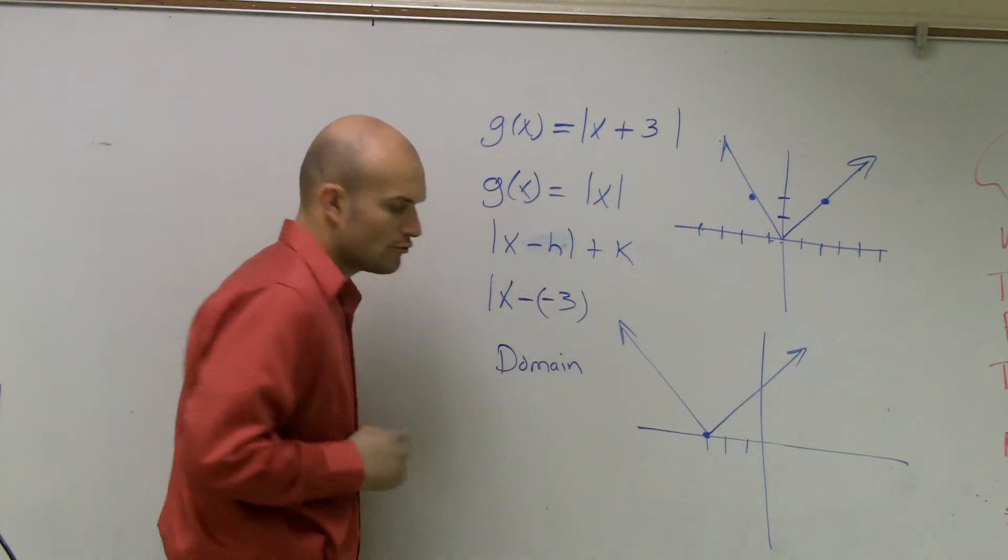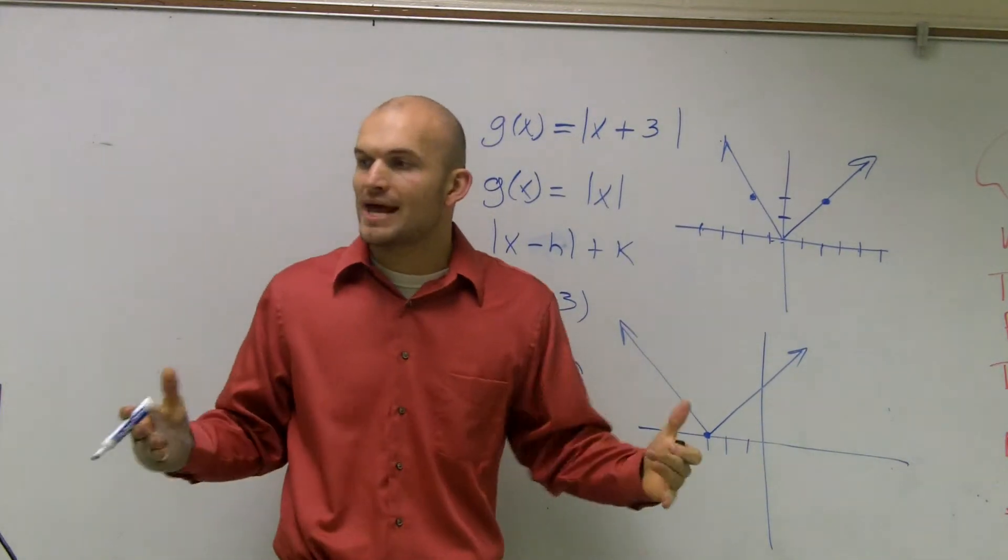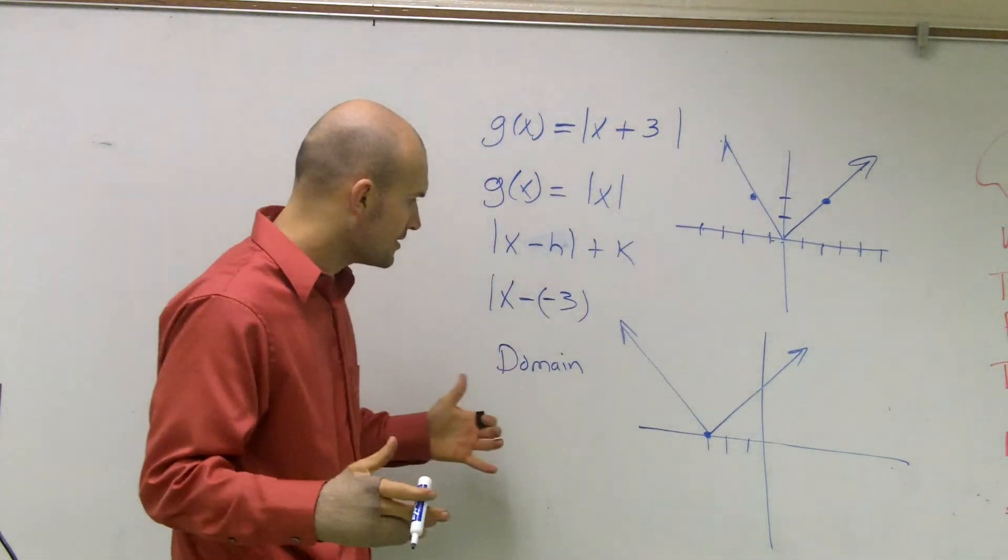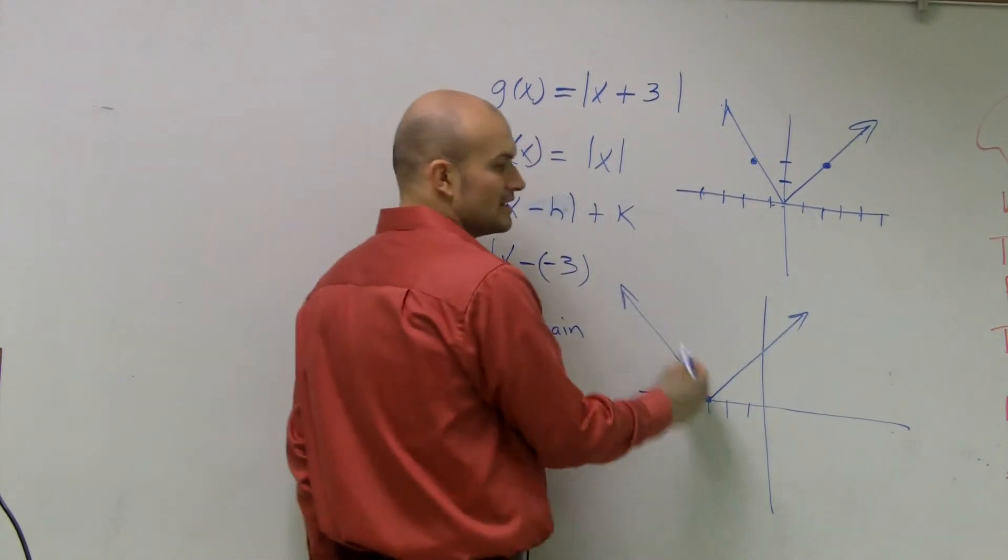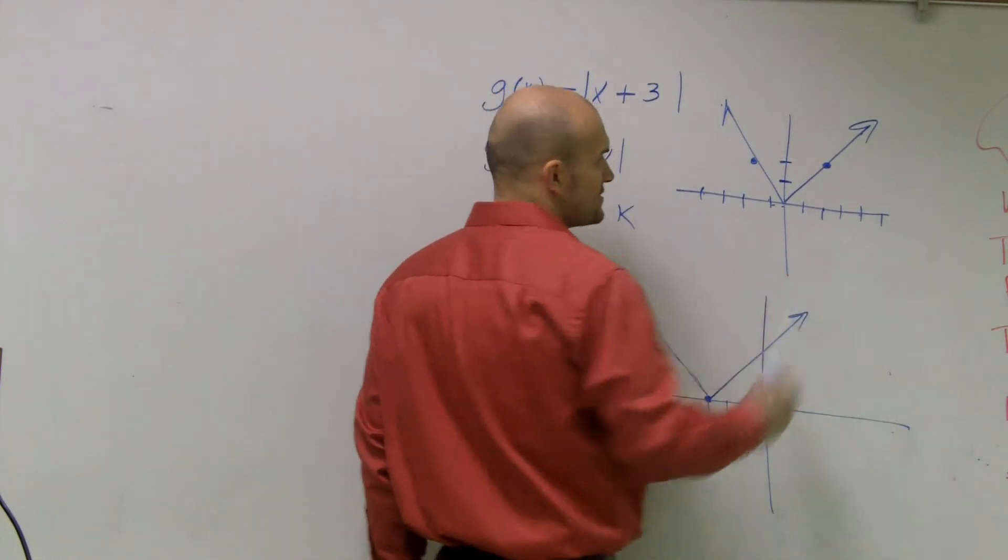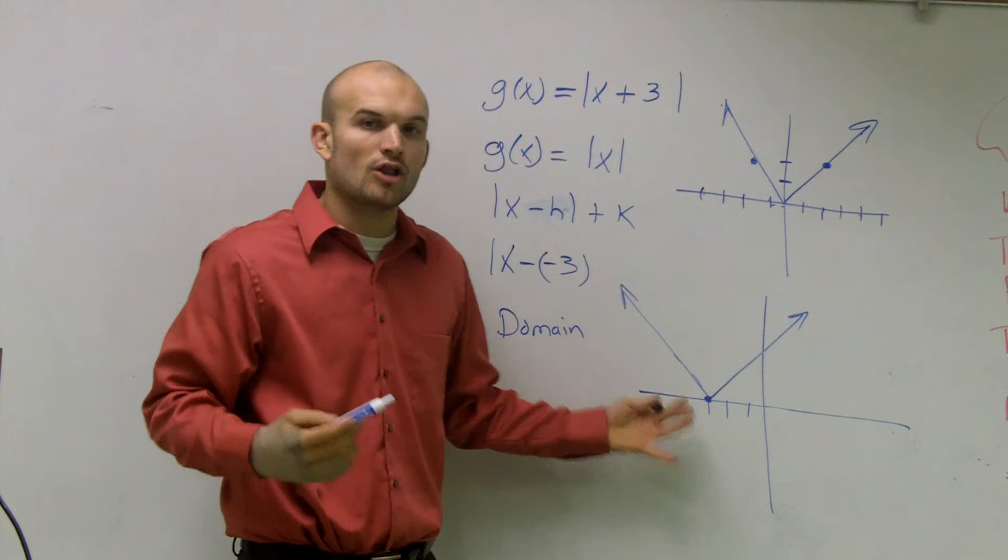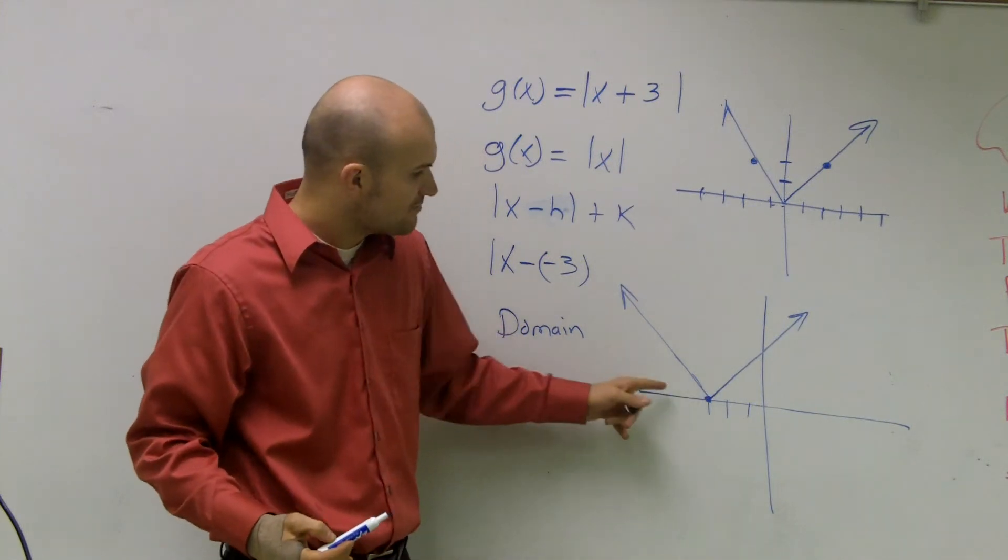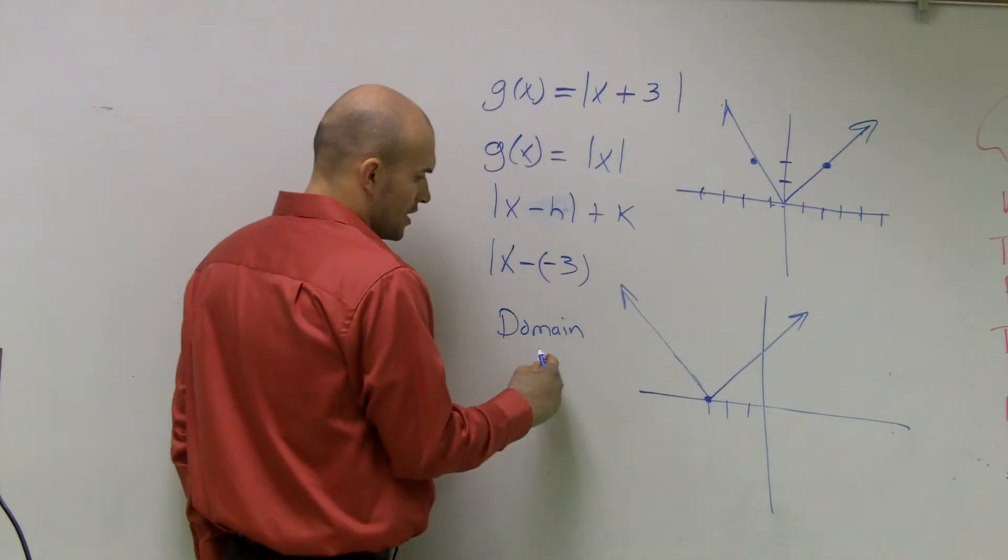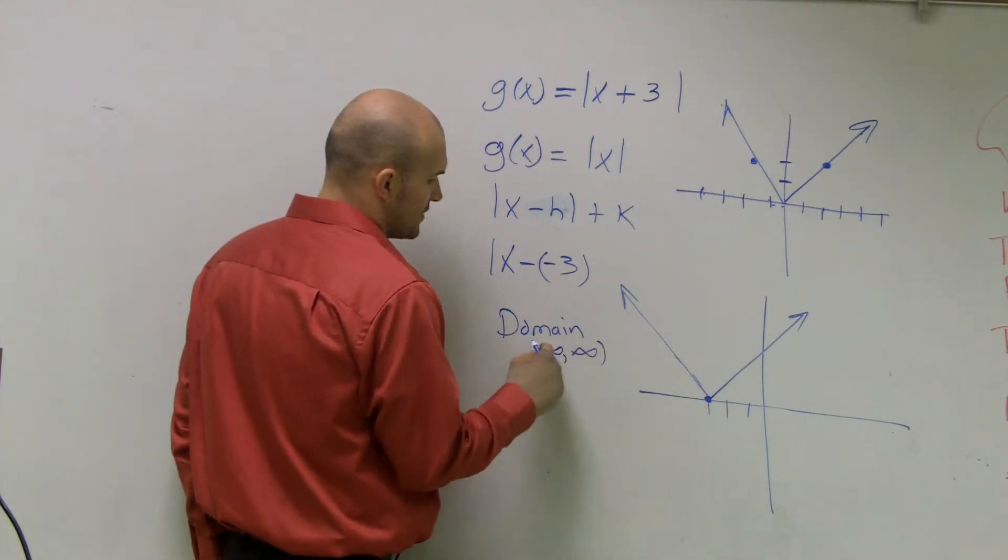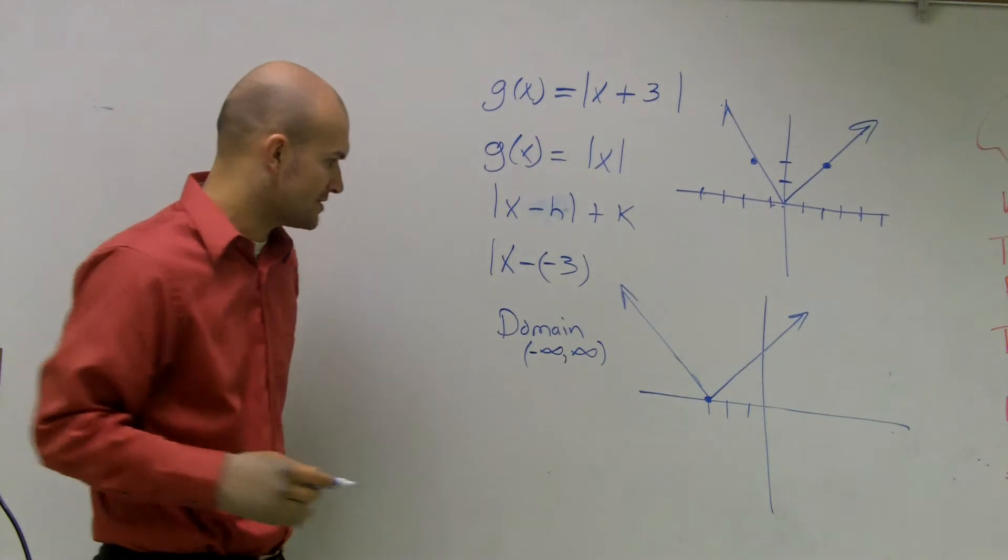The next thing we need to do is determine what is our domain and range. Remember, the domain is the set of all x values that are defined for your function. Well, as this graph is going to continue on forever in the negative direction and in the positive direction, it's going to cover all of my x values. Every x point, every x value has a point on this graph. So therefore, our domain is from negative infinity to positive infinity or what we call all real numbers.